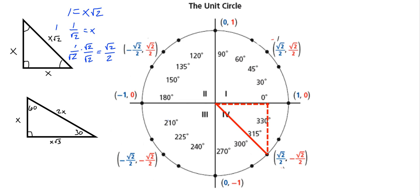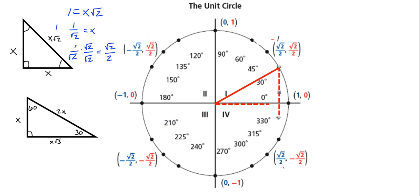Next we look at the 30-60-90 ratios. Taking the radius and rotating it 30 degrees creates a 30-60-90 triangle with the X axis, where the 30° angle is at the origin. Since the hypotenuse is 1, the side opposite 30° equals 1/2 and the side opposite 60° equals √3/2. So our X value is √3/2 and Y value is 1/2, giving the point (√3/2, 1/2).